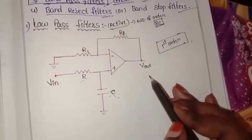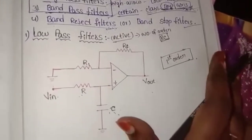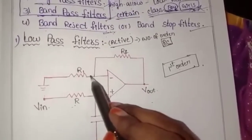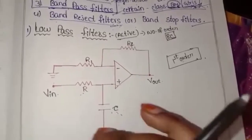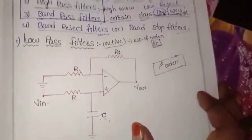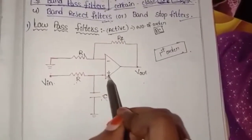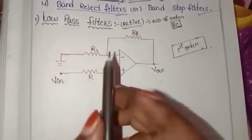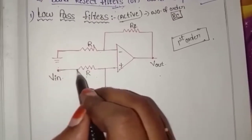The input is connected to the non-inverting terminal. There is open loop and closed loop — open loop with feedback resistance, and closed loop without feedback resistance, making it an open closed loop. We use the first order characteristics. The input voltage is given to the non-inverting terminal in the low pass filter.